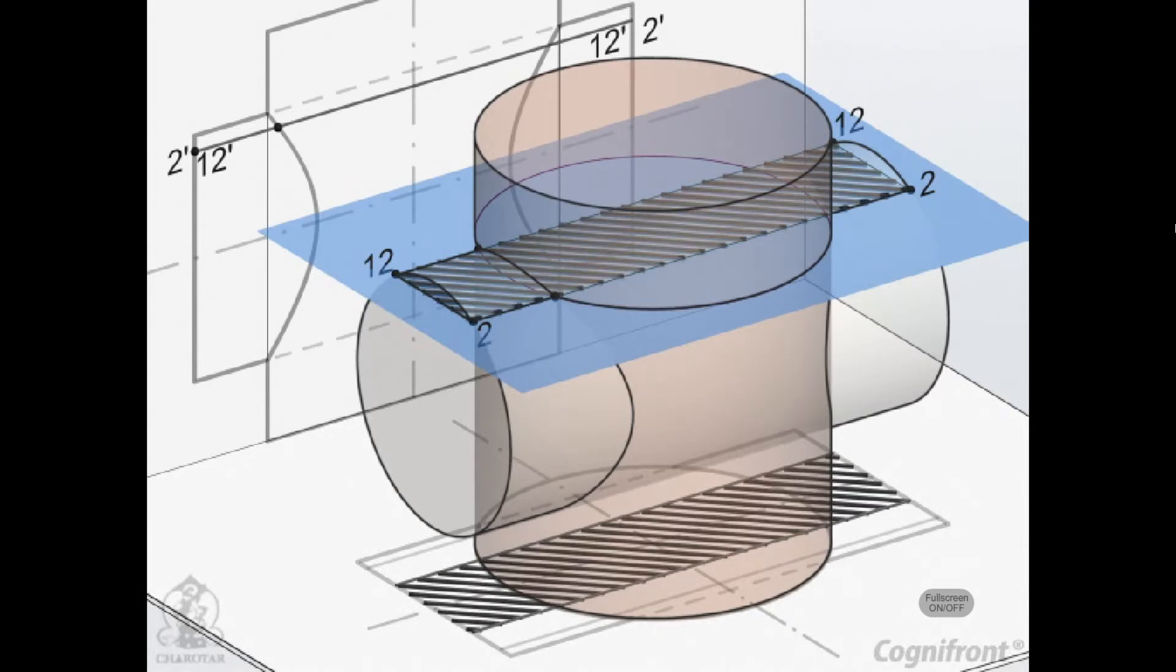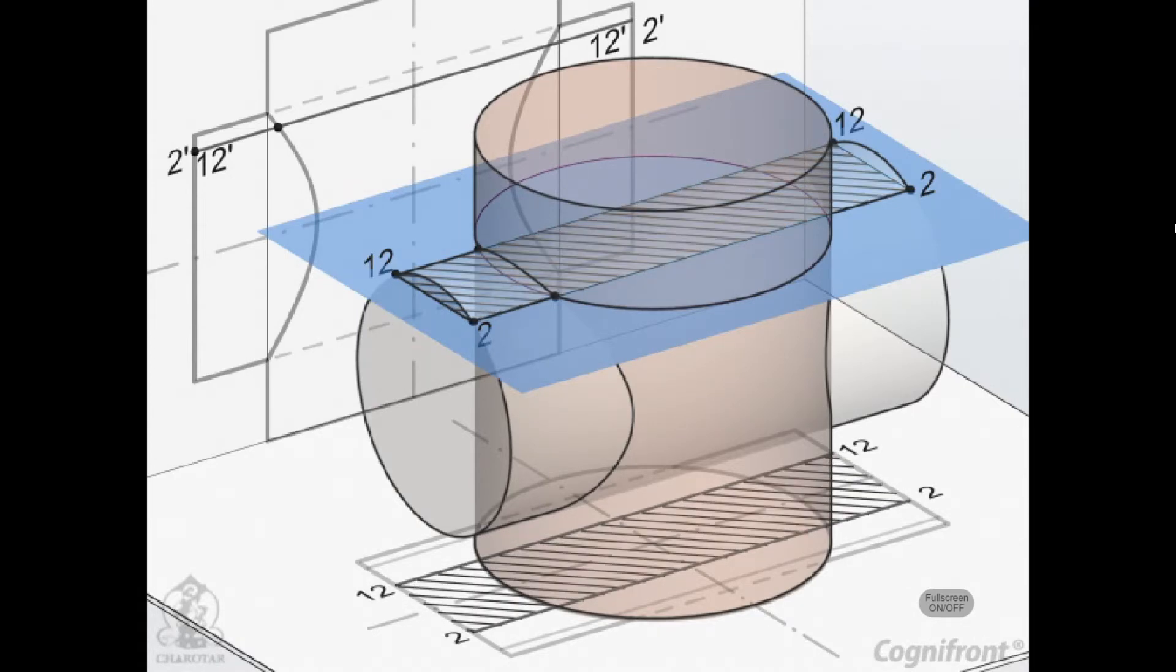The section of the horizontal cylinder will be a rectangle of width W, i.e., the line 2-12.